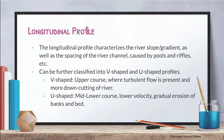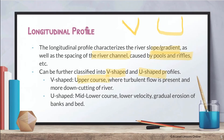The longitudinal profile characterises the river's slope or gradient as well as the spacing of the river channel caused by pools and riffles. These can be classified into V-shape and U-shape profiles. Think of the longitudinal profile as how the river looks in cross-section — will it be a V-shape or a U-shape?